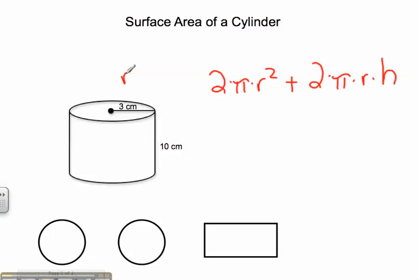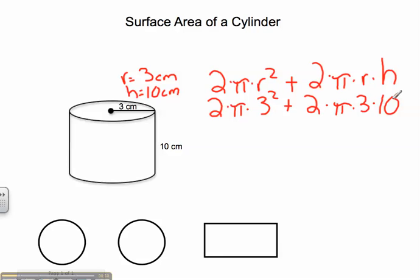I see my radius is 3 centimeters, and my height is 10 centimeters. And I can easily plug that into my formula. So 2 times pi times 3 squared plus 2 times pi times 3 times 10, because that's my height.